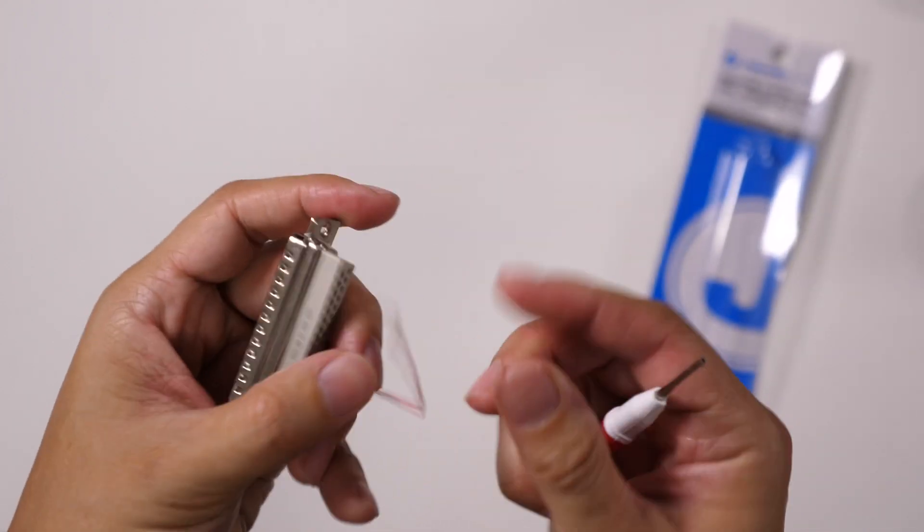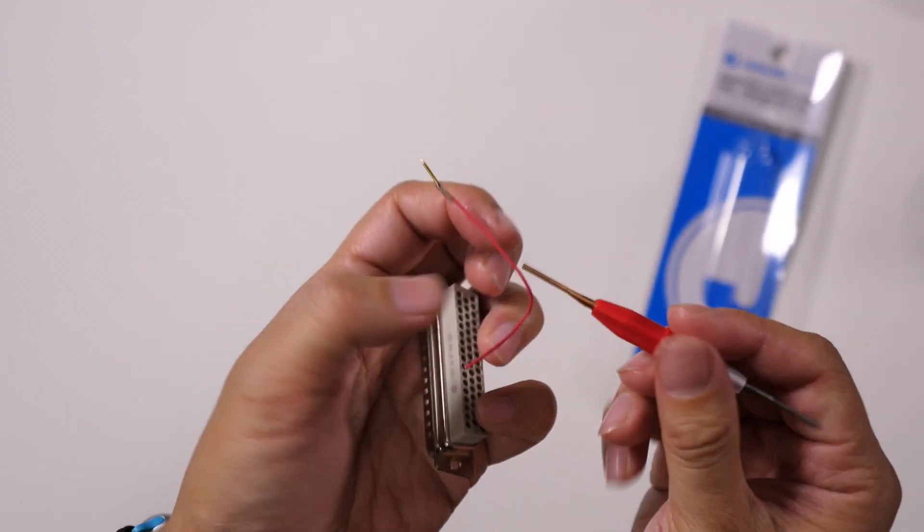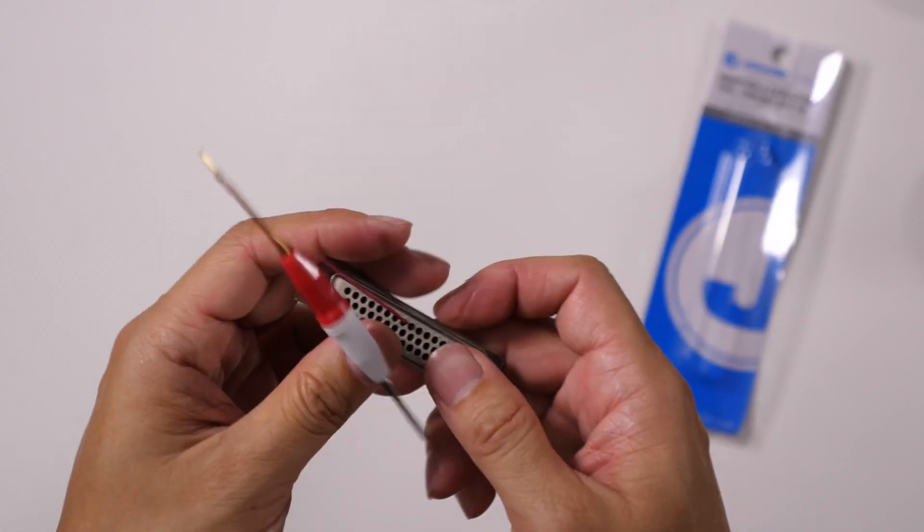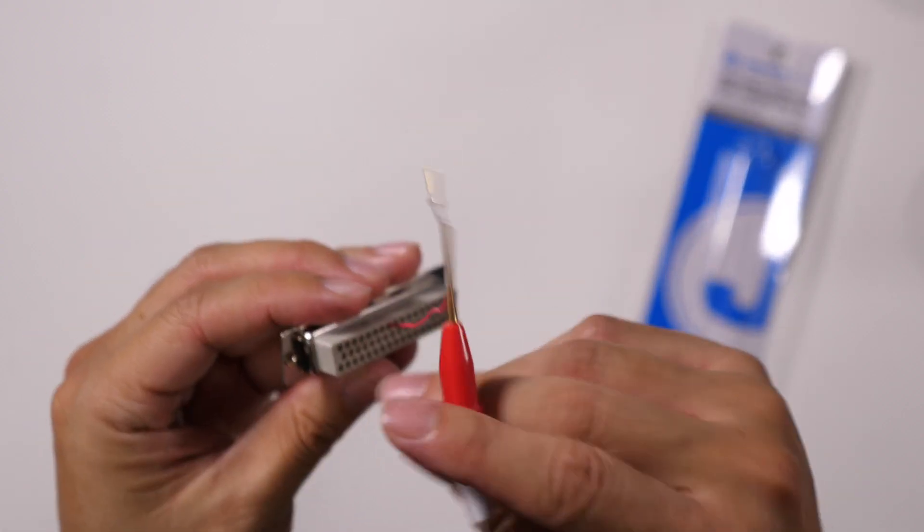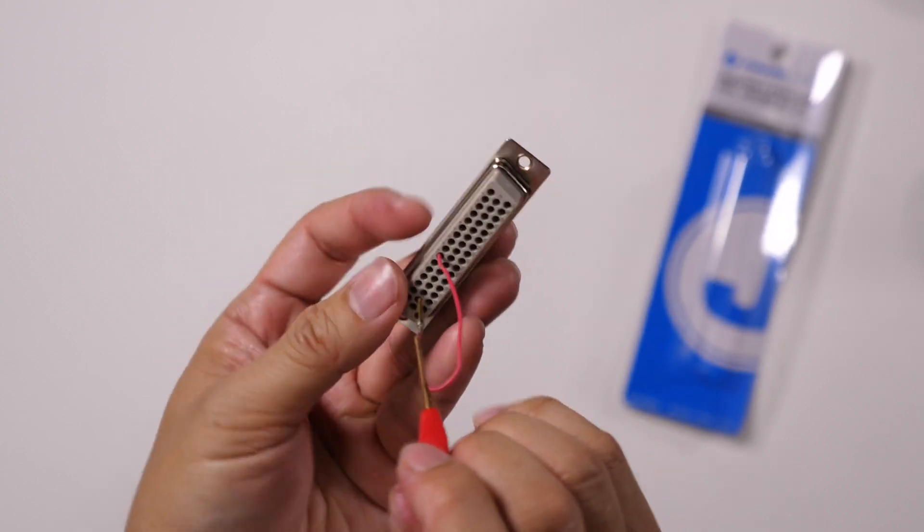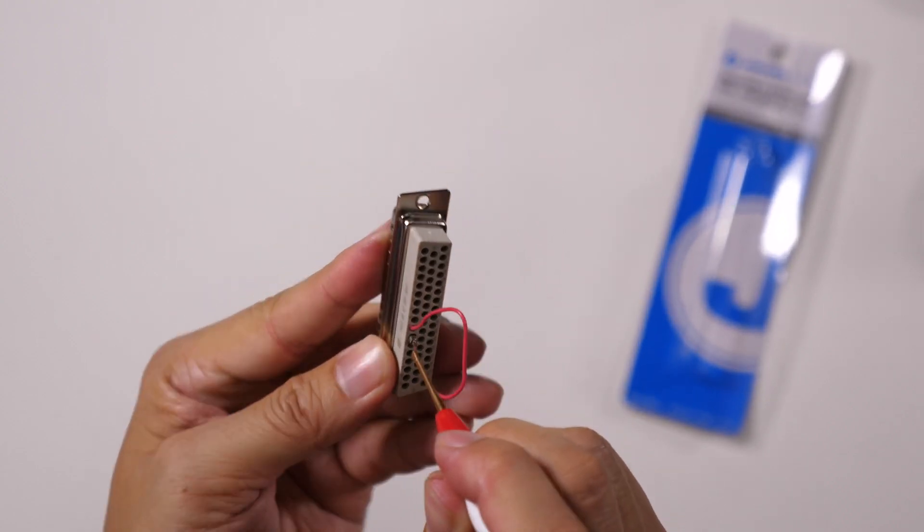If we want to do the other end of this, this is a jumper. Okay, and then insert that into the other contact, which would be 11. So let's go ahead and push that into 11.